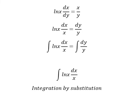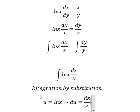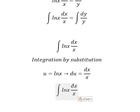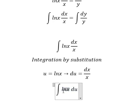So I will put u equals to ln x. So we do first derivative for both sides. We have dx over x. So this one we change for du, and ln x we change for u.